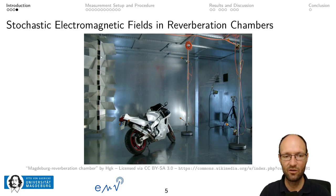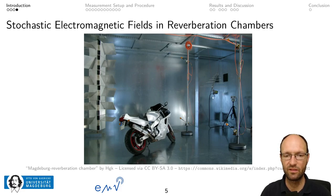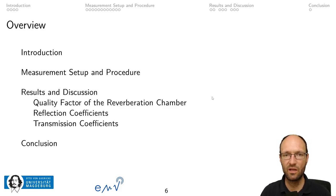What you can see in this photograph is a mode steerer. The use of this mode steerer is to change the electromagnetic boundary conditions of the resonator so that we can move the nodes and anti-nodes of the standing wave pattern of the modes inside this reverberation chamber through the room. You can also see one of the antennas we used for the measurement — a logarithmic periodic dipole antenna. After this short introduction I would like to give some more details of our measurement setup, procedure, and results.